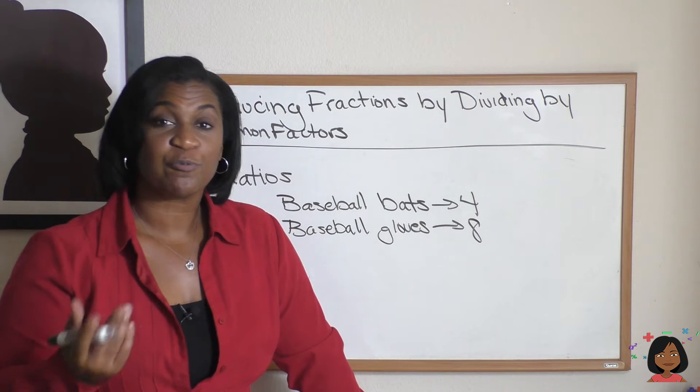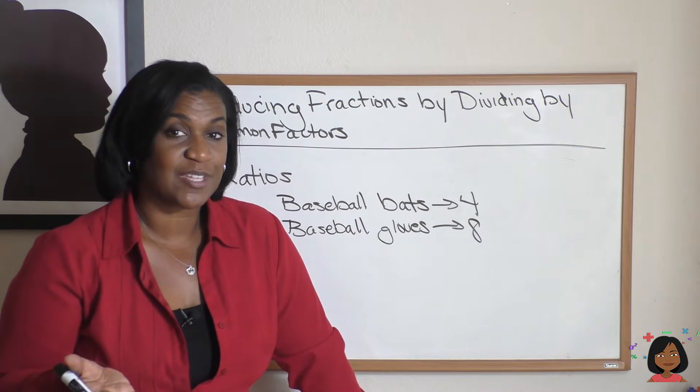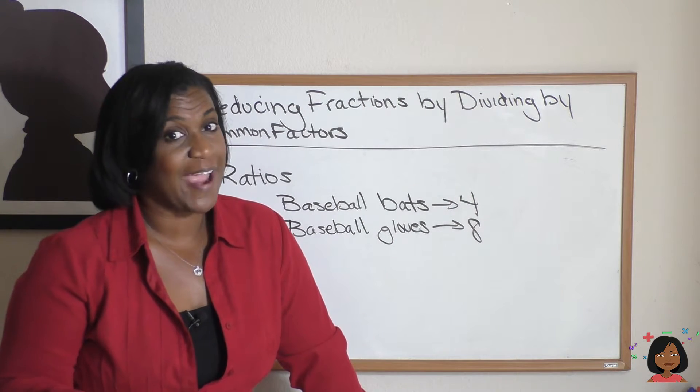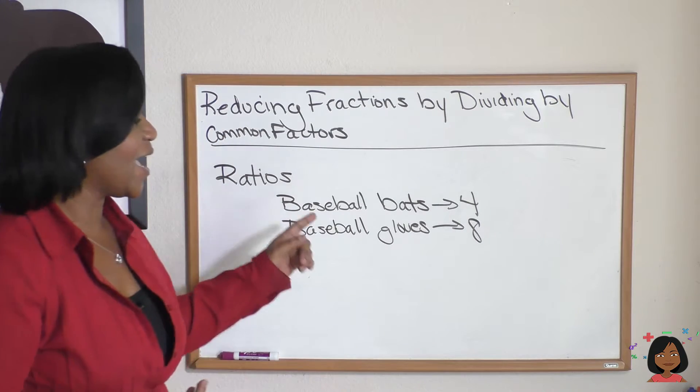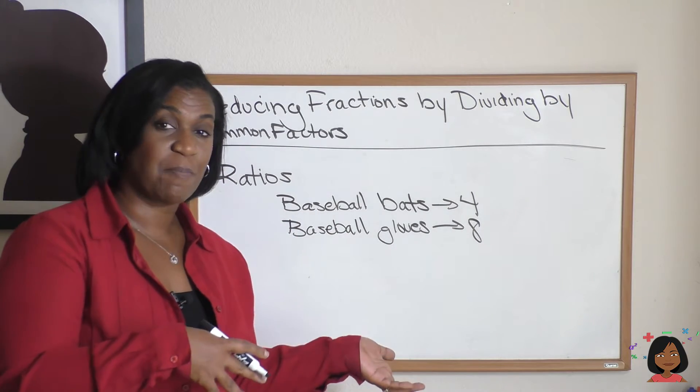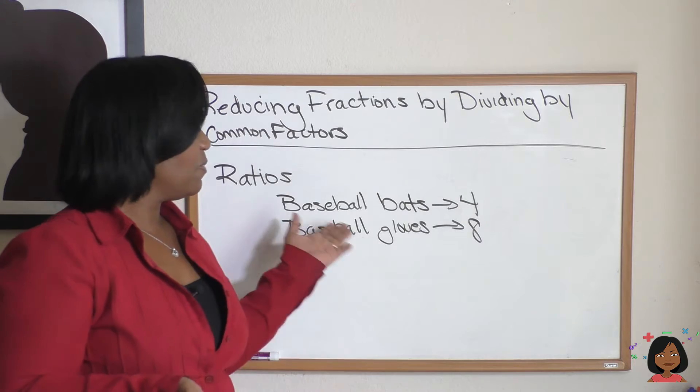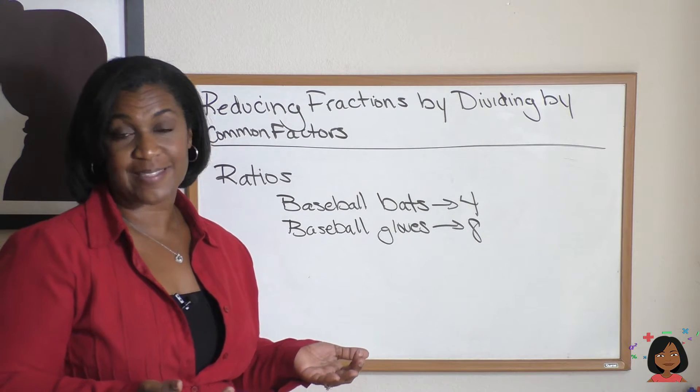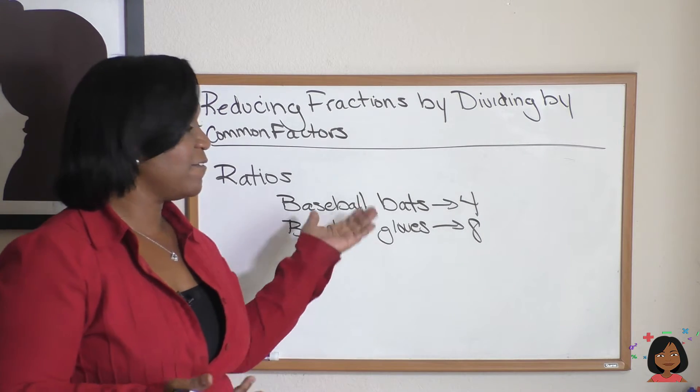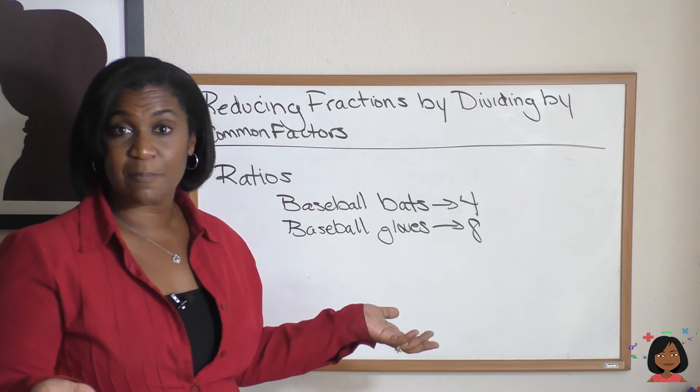You can also reduce ratios, because when we put ratios together, we're really putting together a fraction. So let's say that we had a sports bag that had baseball bats and baseball gloves in it. This one has 4 baseball bats in the bag, and we also have 8 baseball gloves in the bag.